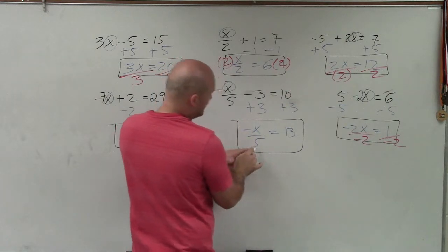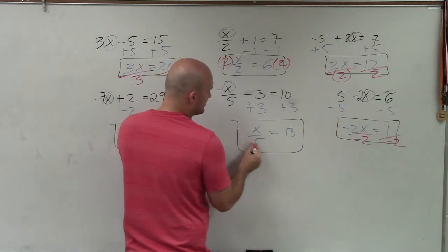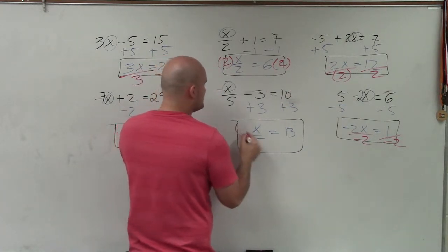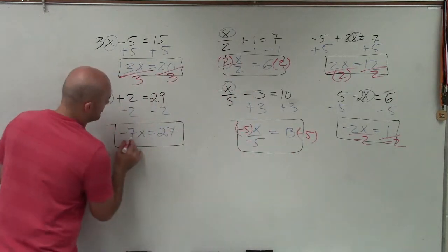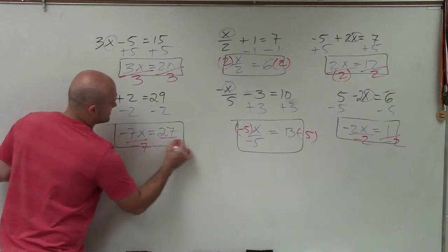Here, I'm dividing, but I'm multiplying by this negative 1. I can just put that negative into 5, so I multiply by negative 5. Here, I'm multiplying by negative 7, so I divide by negative 7.